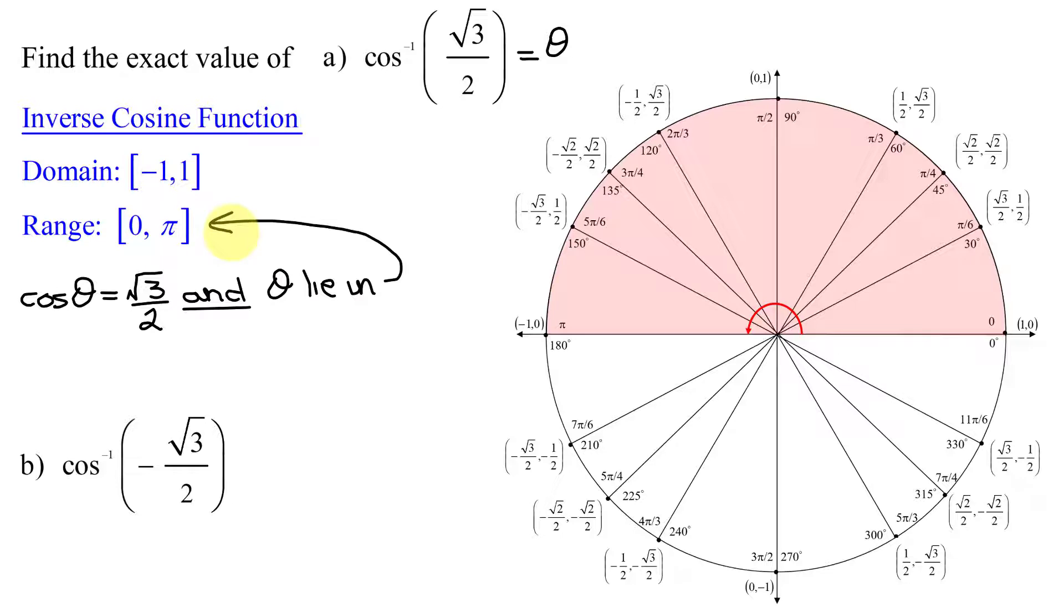The restrictions on theta mean that my angle has to either lie in quadrant 1 or in quadrant 2.